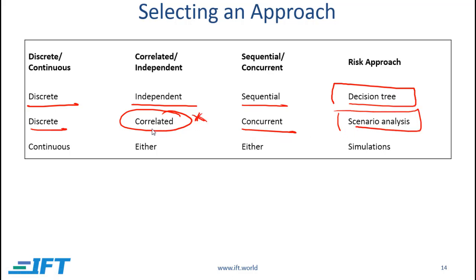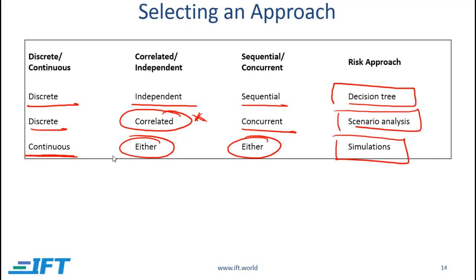This might be slightly tricky: if the risks are correlated, that can be built into the various scenarios. And finally, if we are dealing with continuous risk, then whether the risk elements are correlated or independent, whether they are sequential or concurrent, simulations can be used. So a summary here is that if we are dealing with continuous risk, then simulations make sense. If we are dealing with discrete risk, then we could use either decision trees or scenario analysis depending on whether the risks are correlated or not, and whether the risks are sequential or concurrent.